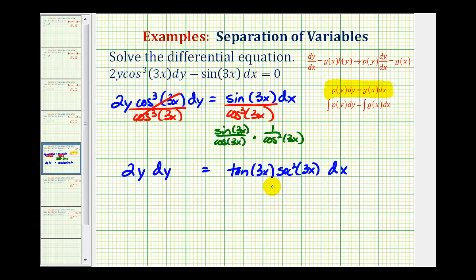And now that we have it in this form, we can integrate both sides of the equation. Now on the left side, we could factor this 2 out, but there's no need to. We'd have 2 times the integral of y to the first with respect to y. The integral of y to the first with respect to y would be y squared divided by 2. So the 2s would simplify out, leaving us with y squared.